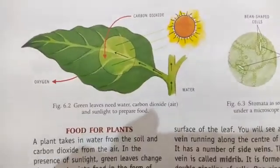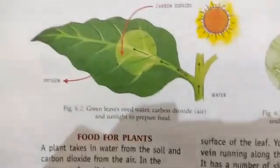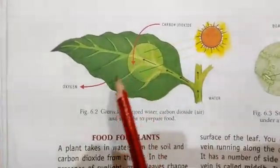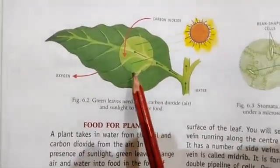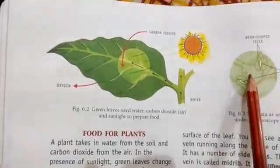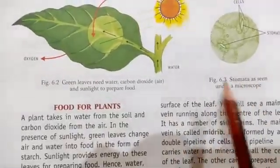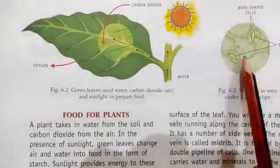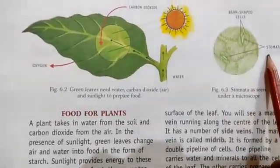Now see figure number 6.2. Look at this figure — green leaves and sunlight. Look at these pores on the green leaves. This is a stomata, which is seen under a microscope. If you keep the leaves under the microscope, you will see this structure — the stomata.